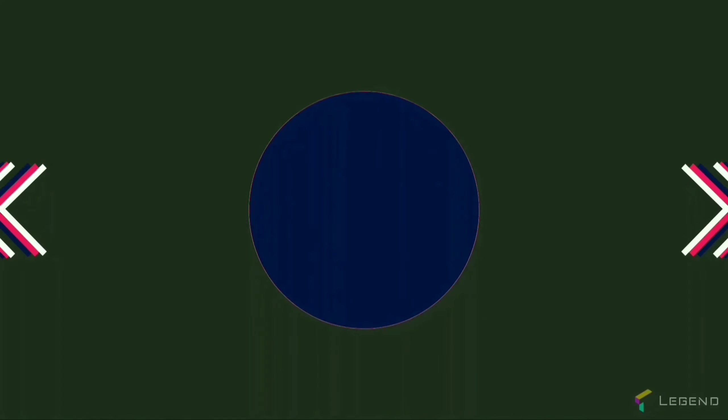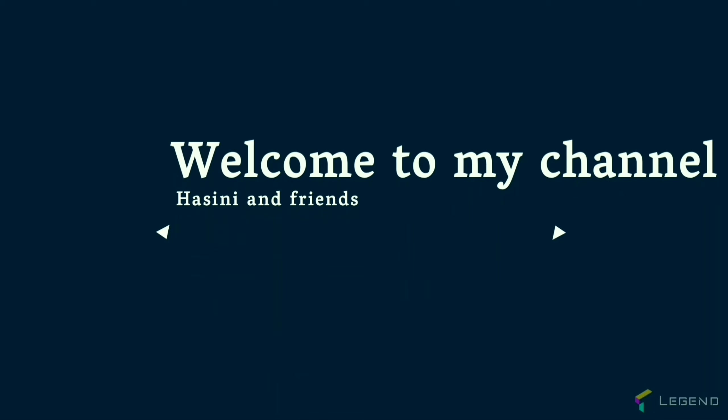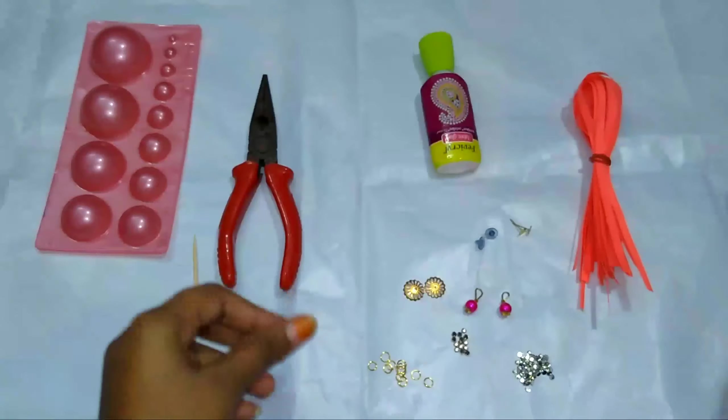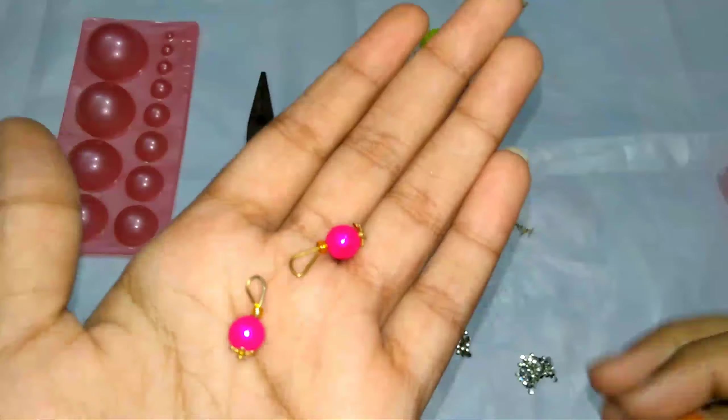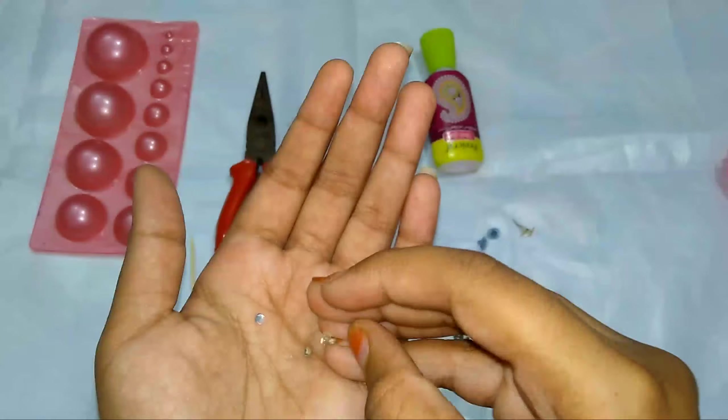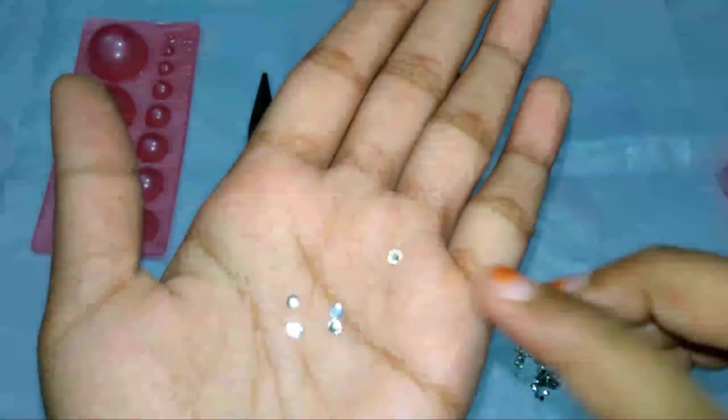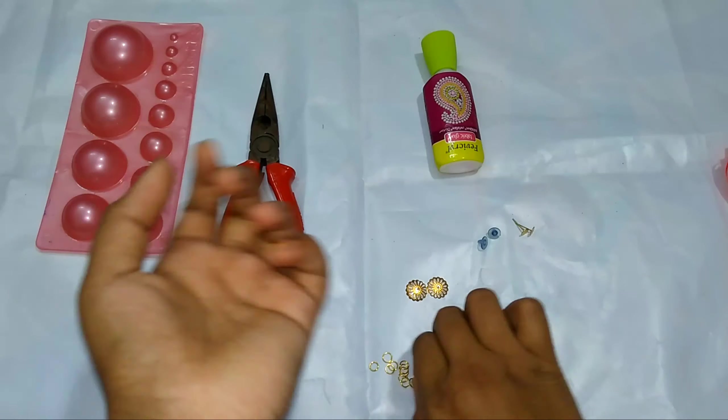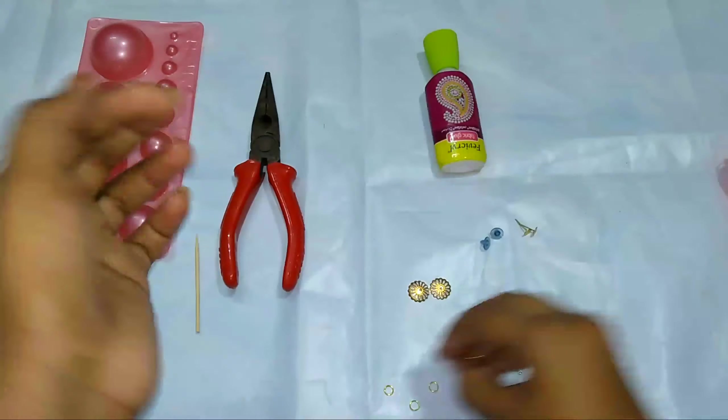Hi friends, welcome to Hasini and Friends channel. Today I'm going to tell you how to make jhumka earrings. Let's start with the required materials: super quiller or quilling needle, quilling strands, pearls, pink color stones, white color small size beads, frame kundans, and small hoop rings.